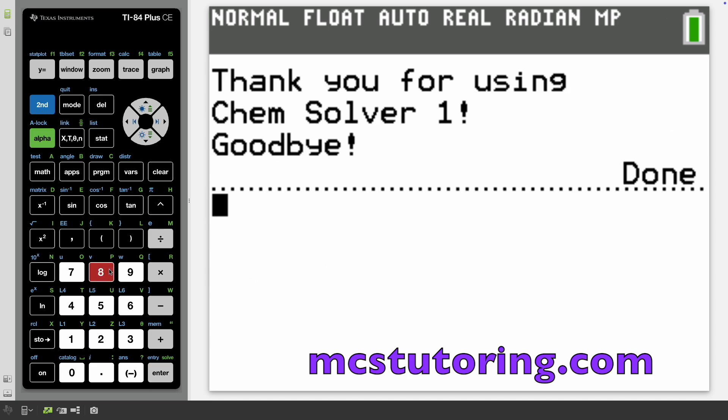Thanks for using Chem Solver 1. When you buy the program, you get it emailed to you. It's named K-E-M-S-O-L-V because you can only have eight characters in the name of a file. You get version 1A, 1B, 1C, that's the next iteration. I'm constantly upgrading this stuff. Take care. Good luck on all your chemistry endeavors. Check out mcstutoring.com. Obviously if you like it, subscribe. Free subscription digitally, baby. Check you later.